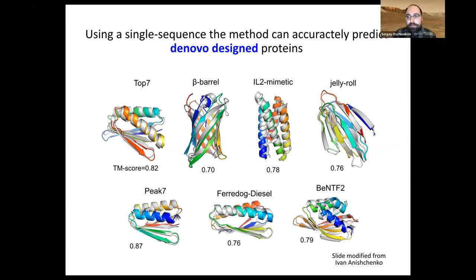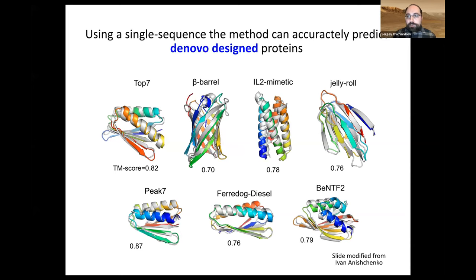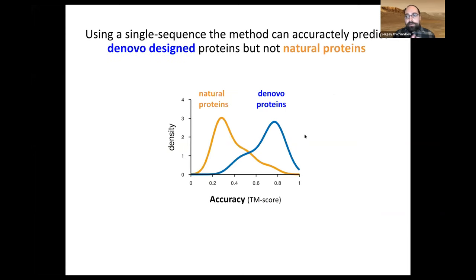This sparked the idea: if methods like TrRosetta are really good at predicting structures, could we use them as an oracle? The idea is — maybe if we have a desired structure, we can keep changing the sequence until we get that desired structure. It turned out that TrRosetta with a single sequence doesn't work well for natural proteins, but works really well for de novo design proteins.